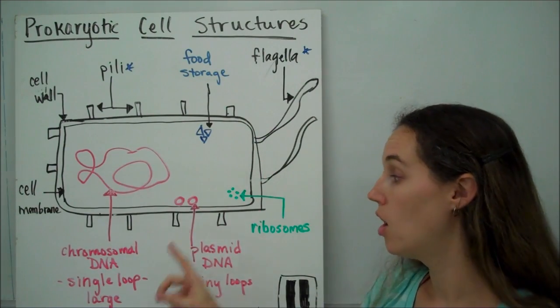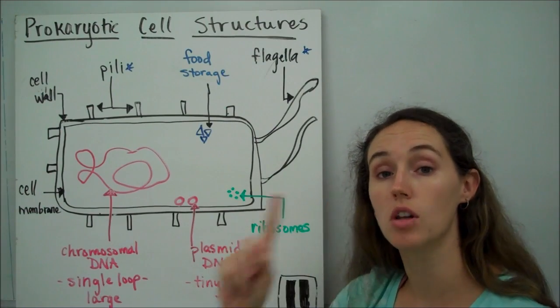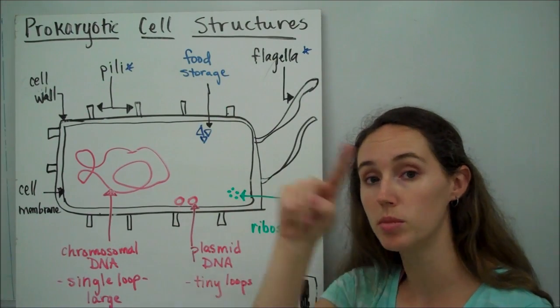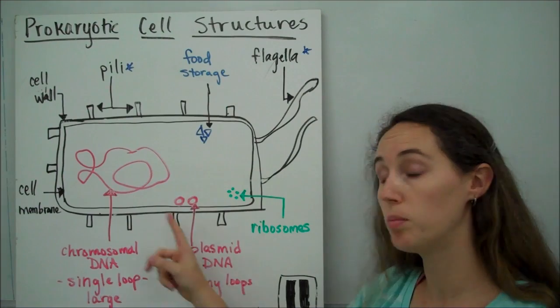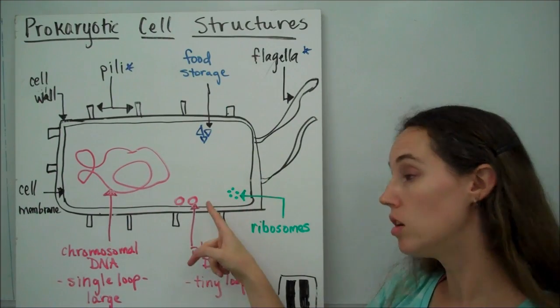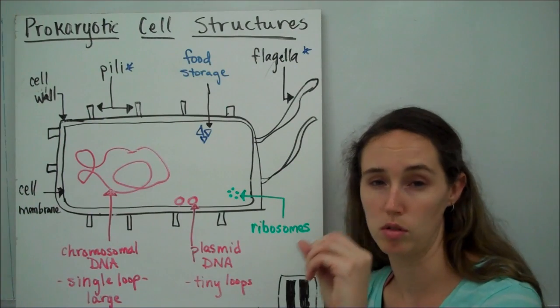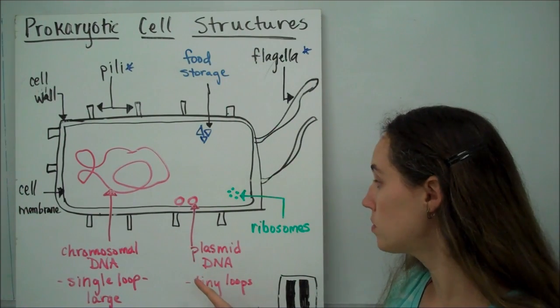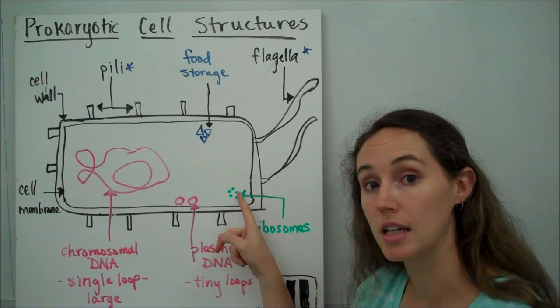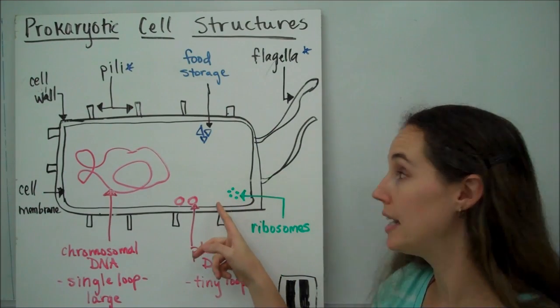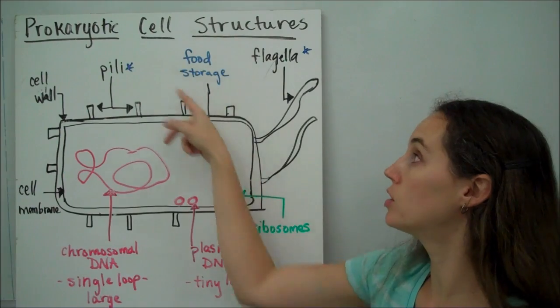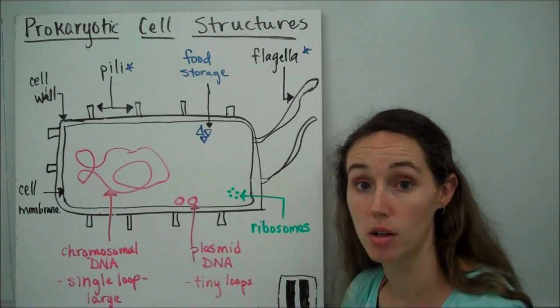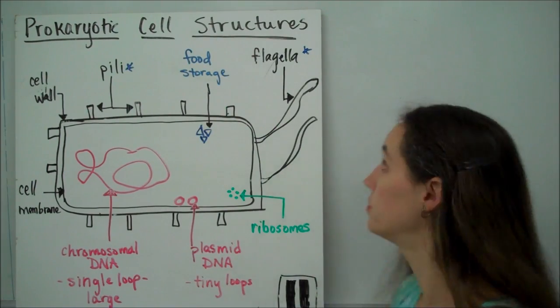you're going to find one singular, large, circular chromosomal DNA. So, one big circle of DNA, and then you may also find some smaller loops of DNA, and these are called plasmid DNA. Again, all living things, all cells have ribosomes in them, and there's some little food storage area within prokaryotic cells as well.